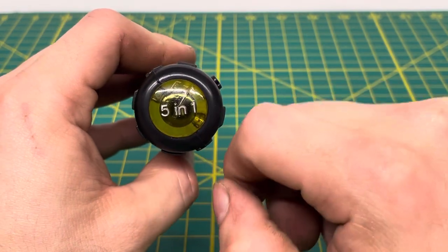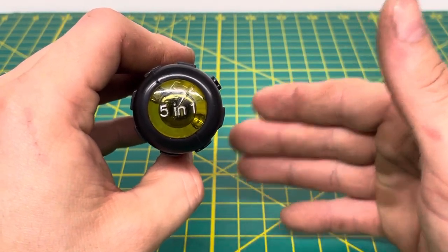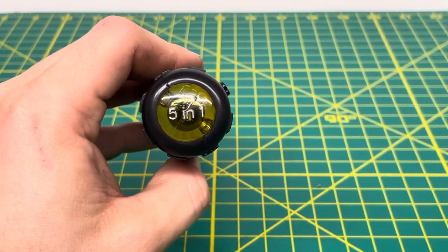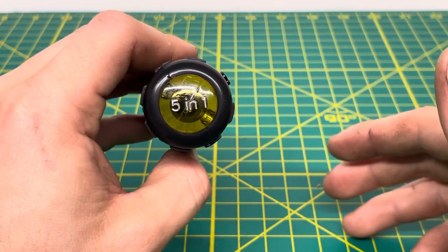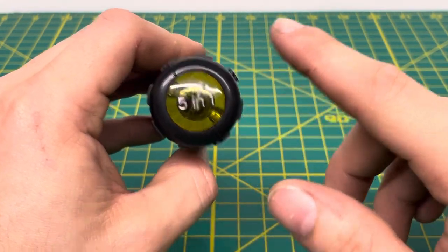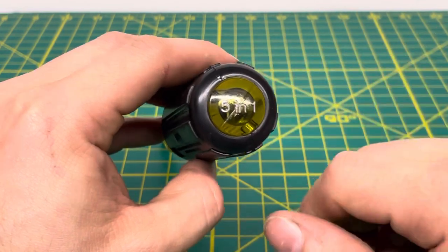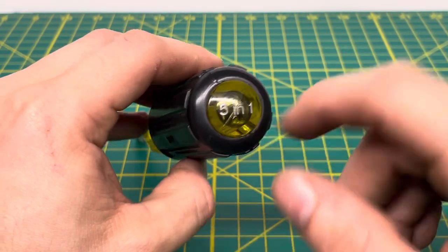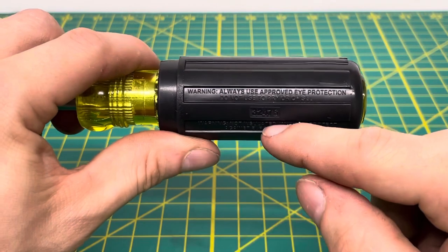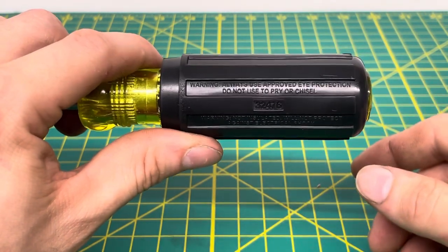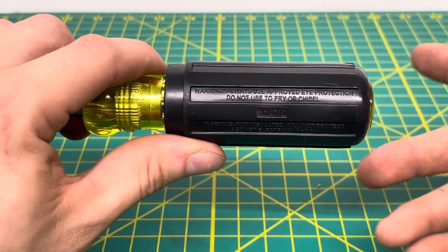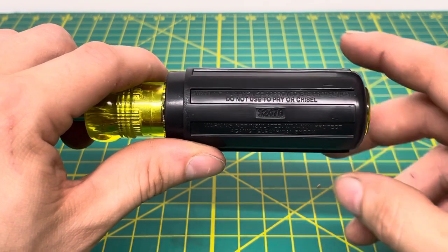Coming to the top of this screwdriver, you can see 5-in-1, so if you have multiple bit drivers or nut drivers in your bag, this is how you're going to identify what tool is what, especially if the tool is facing like this in your bag. You have a warning right here that always use eye protection and do not pry or chisel with this tool because you're most likely going to end up breaking the bits.